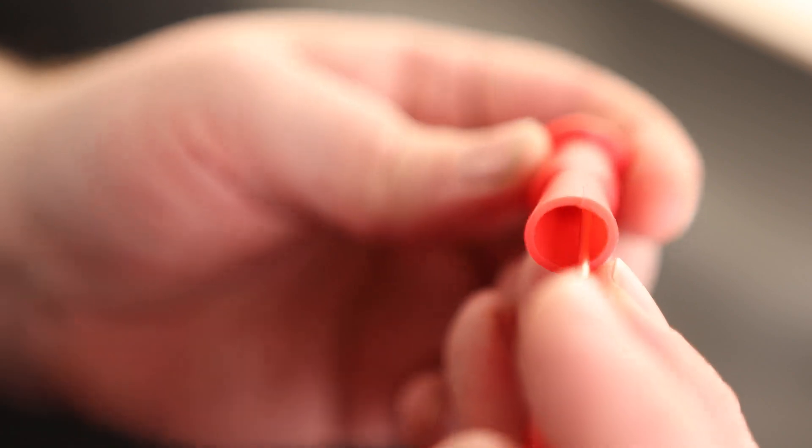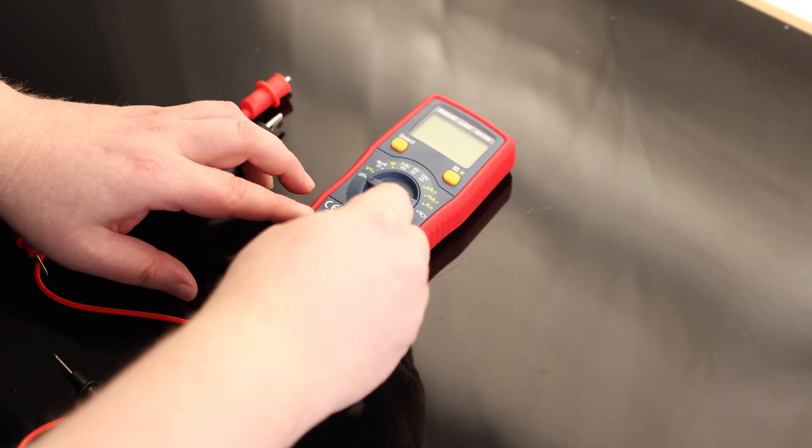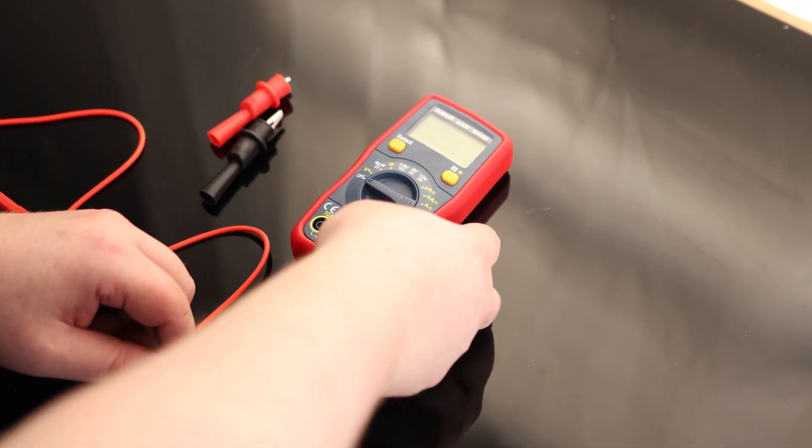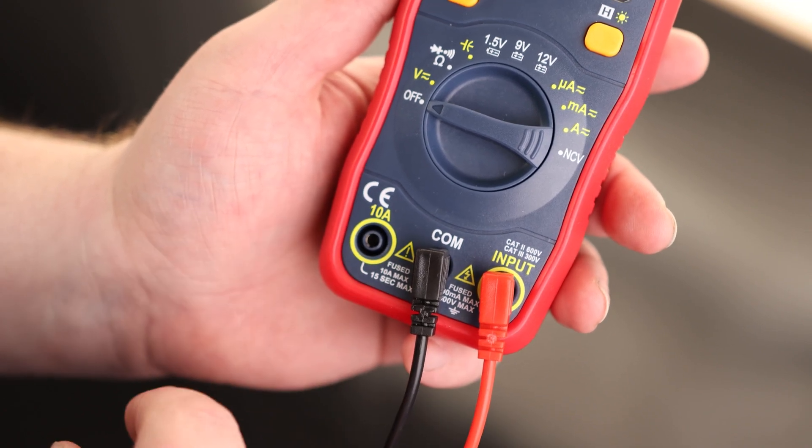And then if you want to use the alligator clip, we just got to find that hole and plug that in. So this makes life a lot easier. So I'm going to use black to common and red to input. Most measurements you're going to be doing, you want to do exactly like this. But if you want to measure current, you can plug this into the 10 amp fuse spot.